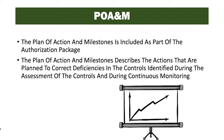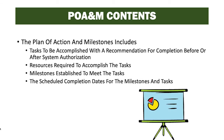The POAM is a plan for how the system owner or common control provider is going to address and fix deficiencies uncovered during assessments. It includes the tasks to be accomplished, with a recommendation for completion before or after system authorization, resources required to accomplish the tasks, milestones established to meet those tasks, and the scheduled completion dates for the milestones and tasks — defining how, when, and by whom deficiencies are corrected.